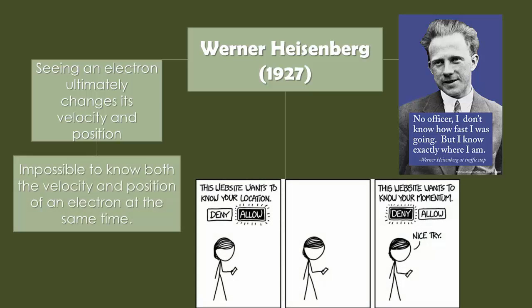All of that helped Werner Heisenberg in 1927 to see that an electron ultimately changes its velocity and position. It is impossible to know both the velocity and position of an electron at the same time. The reason is that the second a photon touches an electron and bounces back into your eye, the photon, a particle of light, will influence the behavior, speed, and position of an electron. The second you see it, it's no longer in the same path or speed because it bounced right away.